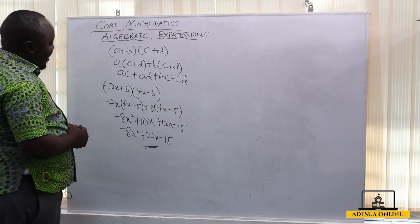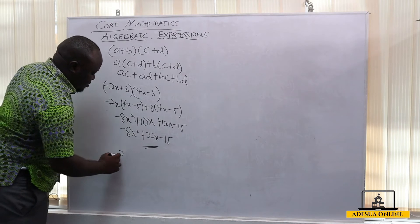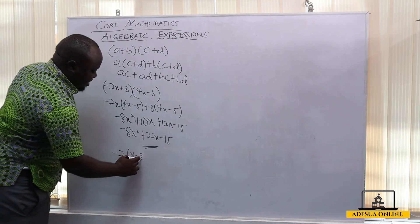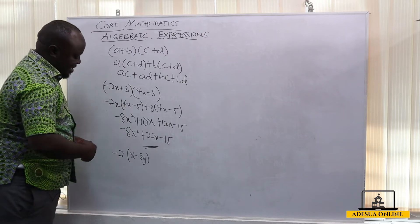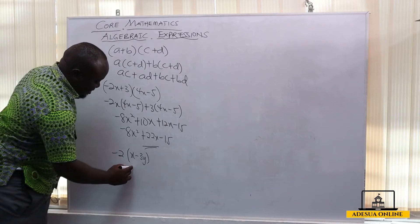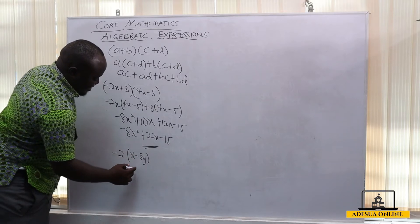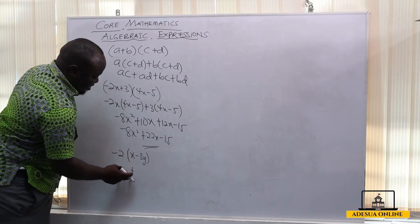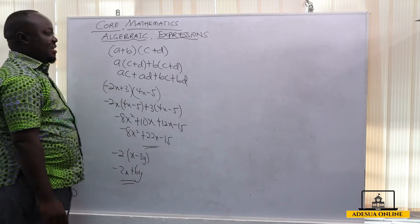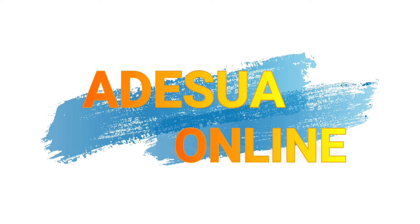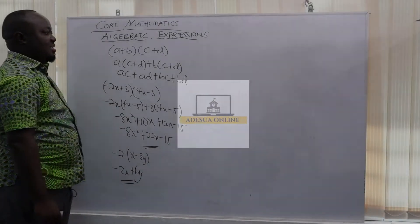Now if we have, let's say, minus 2 into x minus 3y and we want to expand this by removing the bracket. This just becomes minus 2x plus 2 times 3 is 6. And negative times negative is positive. So we have 6y. So this becomes our answer.